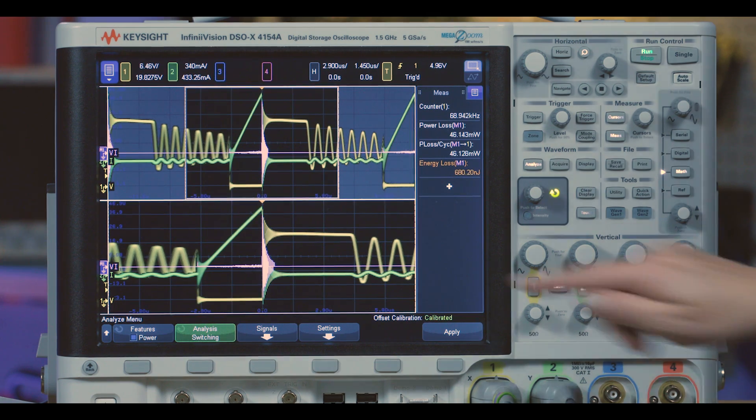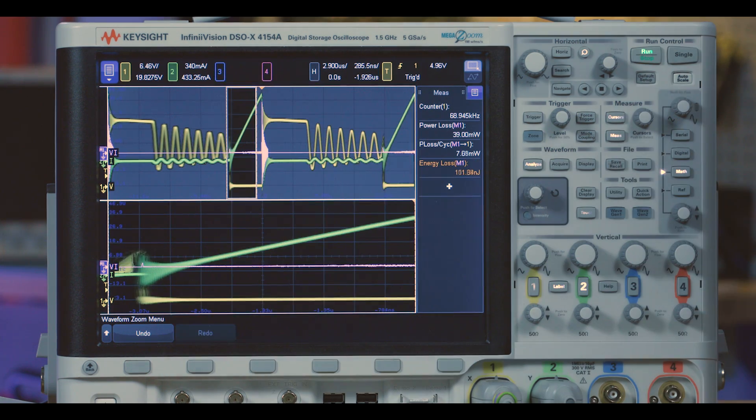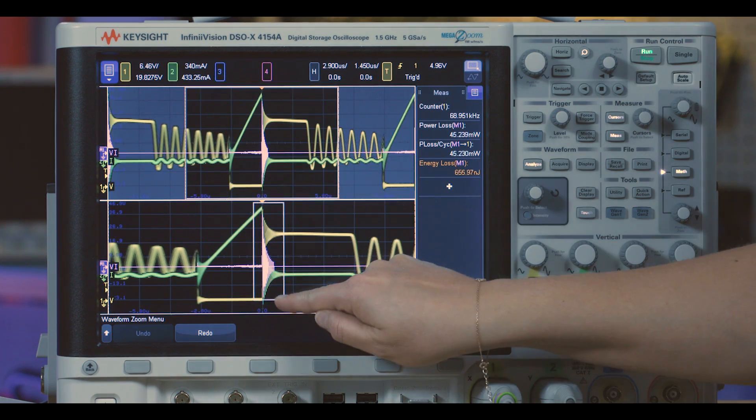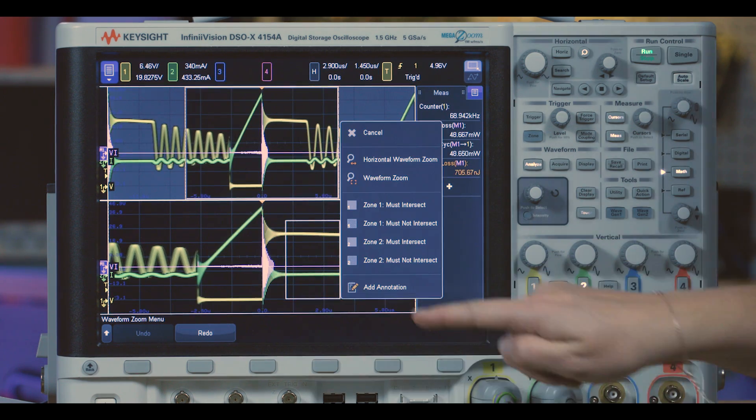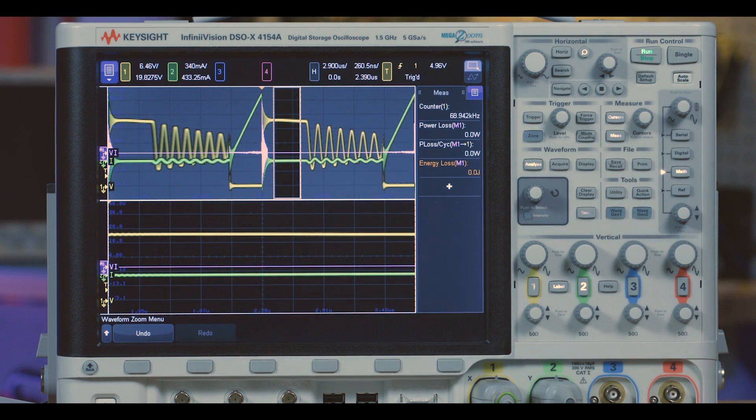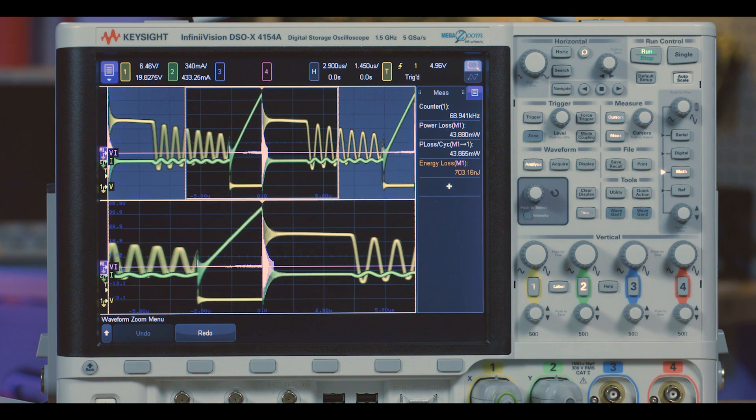We also get all the power loss measurements displayed automatically. You can zoom in and look at each phase, the conduction, the switching, and the non-conduction phase. The purple waveform is the instantaneous power.